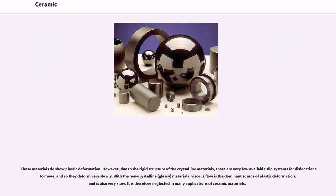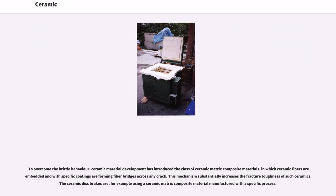These materials do show plastic deformation. However, due to the rigid structure of the crystalline materials, there are very few available slip systems for dislocations to move, and so they deform very slowly. With the non-crystalline, glassy materials, viscous flow is the dominant source of plastic deformation, and is also very slow. It is therefore neglected in many applications. To overcome the brittle behavior, ceramic material development has introduced ceramic matrix composite materials, in which ceramic fibers are embedded and with specific coatings form fiber bridges across any crack. This mechanism substantially increases the fracture toughness of such ceramics. The ceramic disc brakes, for example, use a ceramic matrix composite material manufactured with a specific process.